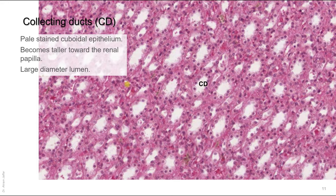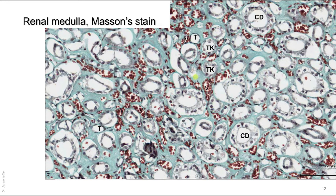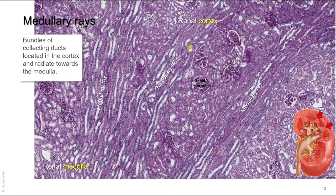Collecting ducts are mainly found in the medulla, lined by simple cuboidal epithelial cells with no brush border. Their cells are slightly taller than those lining the thick limb of the loop of Henle and their luminal diameter is larger. In a section stained with Masson's stain — which highlights connective tissue — you can still identify thick limbs of the loop of Henle, collecting ducts with large lumina and taller cuboidal cells, thin limbs of the loop of Henle, and vasa recta.